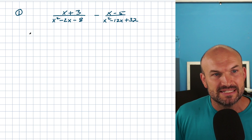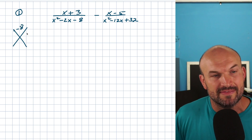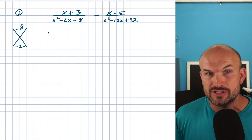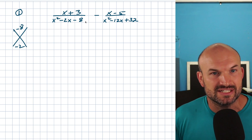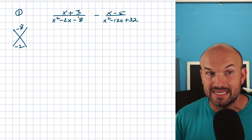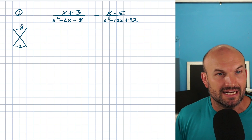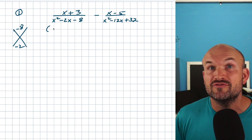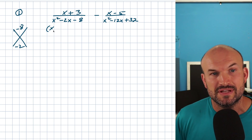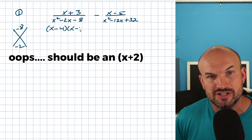On the left-hand side, basically what I'm doing is saying: what two numbers multiply to give me negative eight and add to give me negative two? I'm thinking four and two, because the difference of them is two and they multiply to give me negative eight. Since my middle term is negative, that means the four has to be negative. So that's going to be (x - 4)(x - 2).